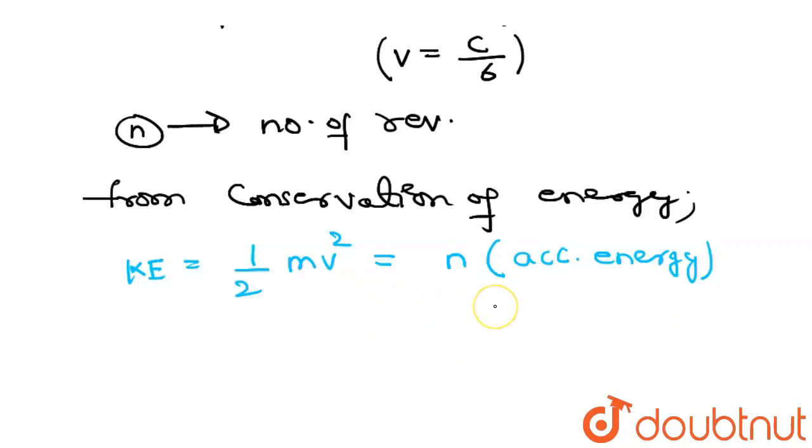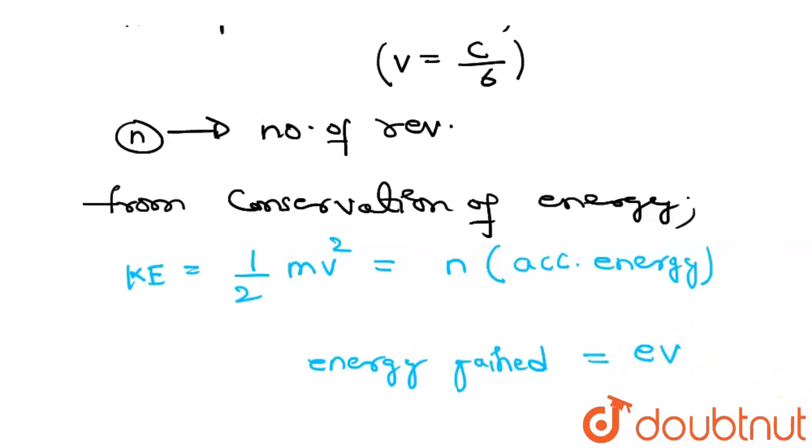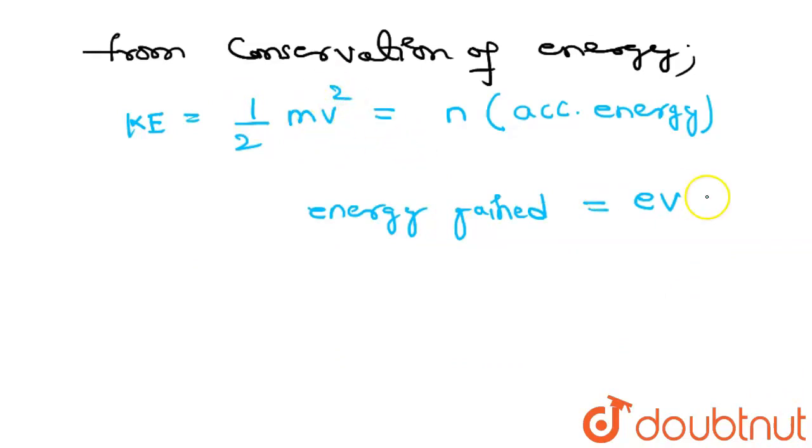In one revolution, the energy gained is eV. The charge is e and V is the potential difference. In one revolution, the energy gained will be e into V.